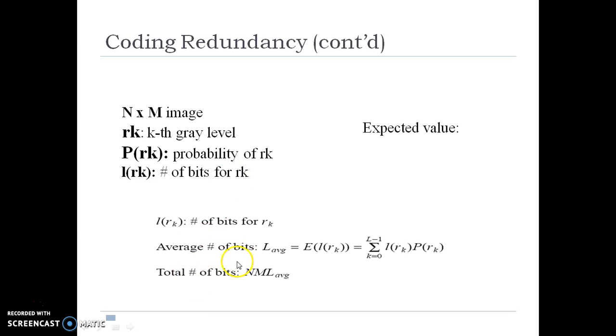The average bit L_avg is calculated as the summation from k = 0 to L-1 of L(Rk) times P(Rk), which represents the total number of bits used to represent that particular image.